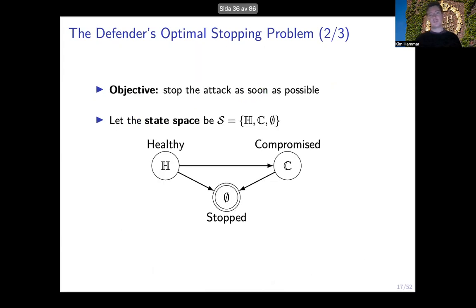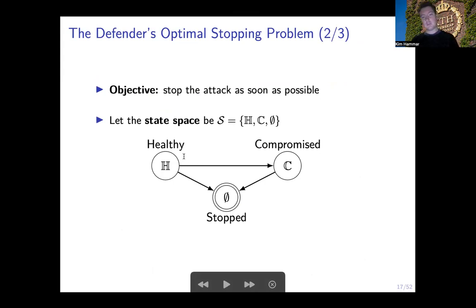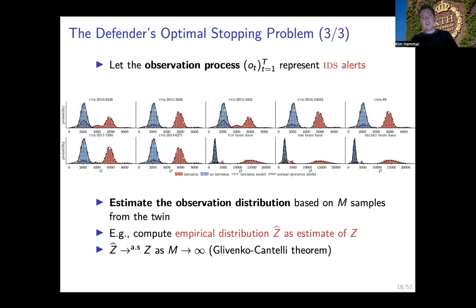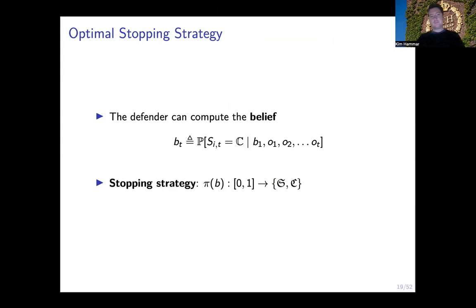Concretely, we define this objective as stopping the intrusion as soon as it has started, but not before. We define a very simple dynamical system which starts in the healthy state and at some unknown point in time transitions to the compromised state. Once that transition has occurred, we want to stop the intrusion as soon as possible. The challenge for the defender is that it cannot measure the state directly; it can only observe noisy observations. We define these observations to be IDS alerts, and we utilize the twin to collect measurements of the number of alerts in different states.